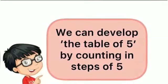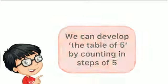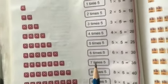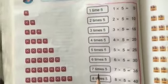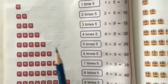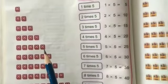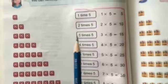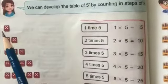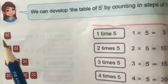Students, we can develop the table of five by counting in steps of five. Let's start today's topic. Here, as you can see, there are many dices and each dice has five dots.